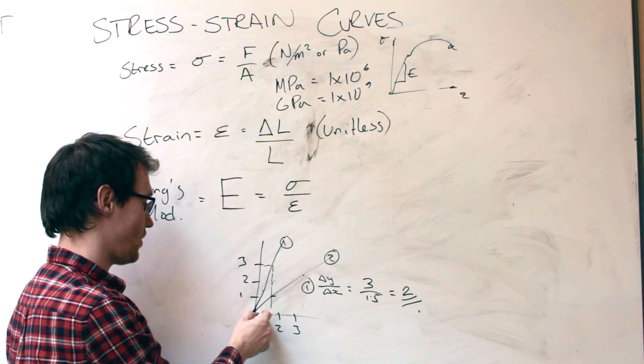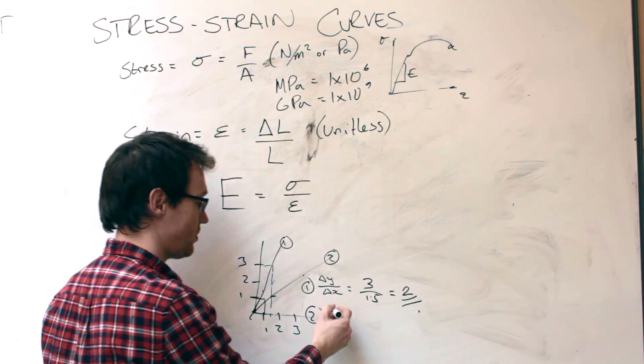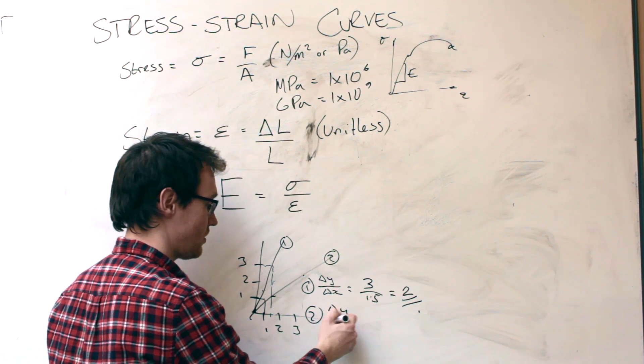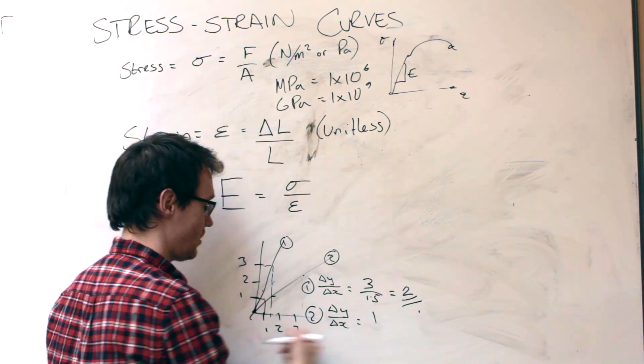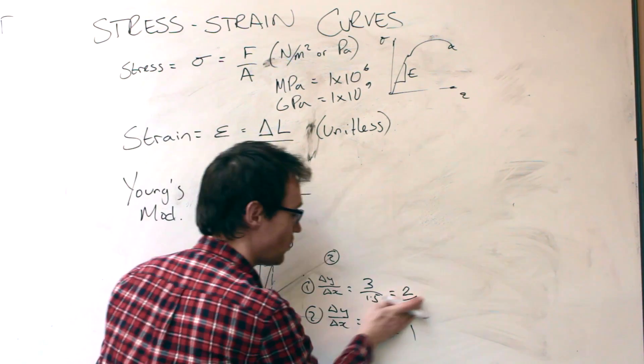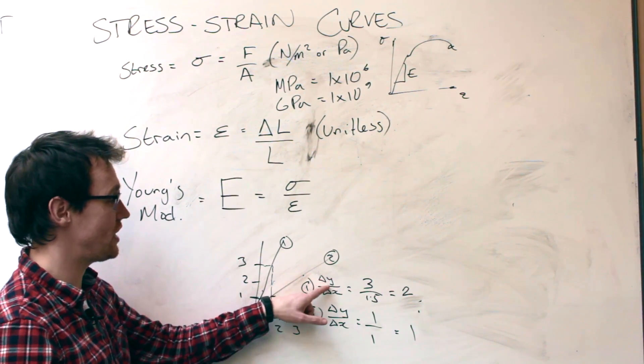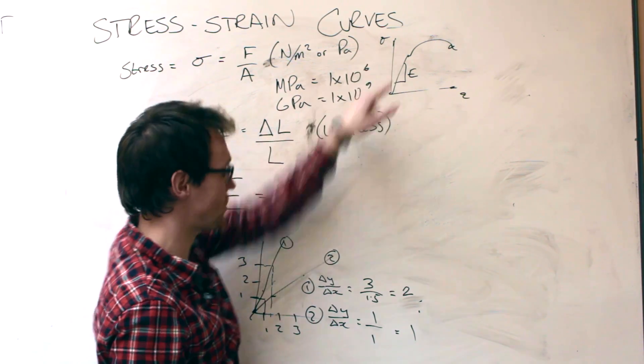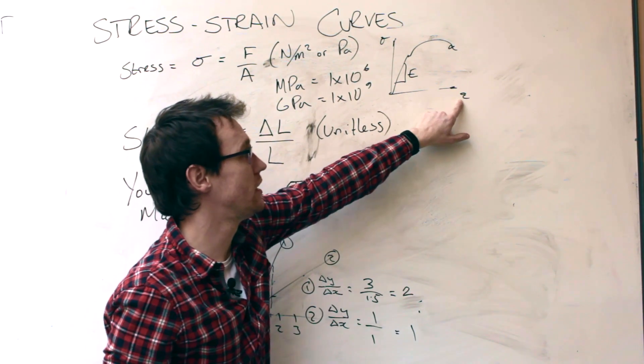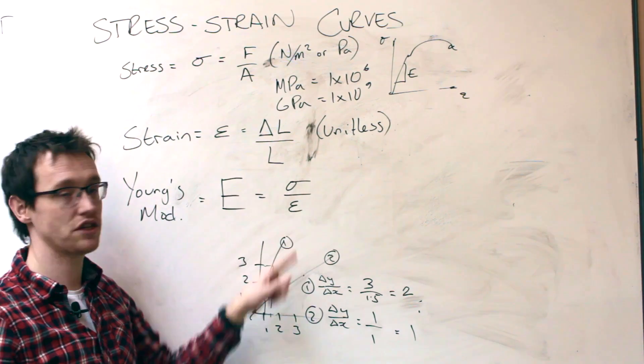And for this one, we've got a change in one for one. So for line two, it goes one unit up and one unit along. So that's got a gradient of one. Exactly the same is the case. So instead of using change in y, which happens to be stress, and change in x, which happens to be epsilon or strain, we've got Young's modulus is stress over strain. That's just something you need to remember.